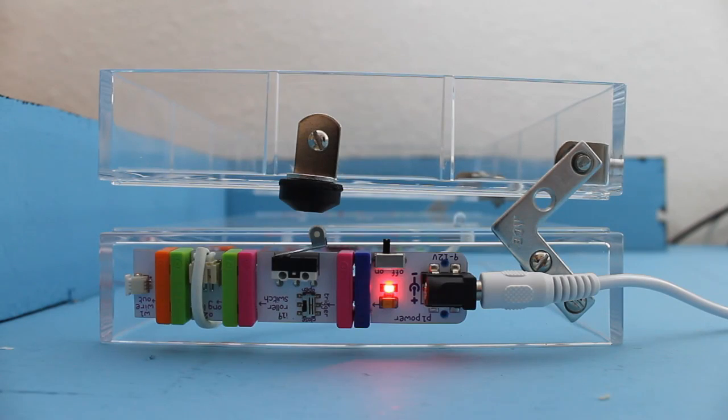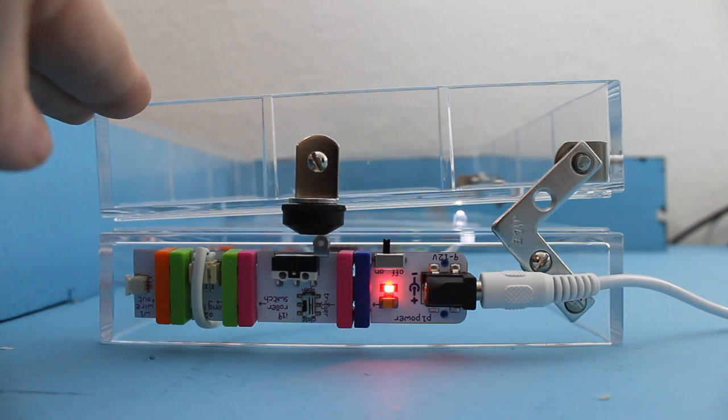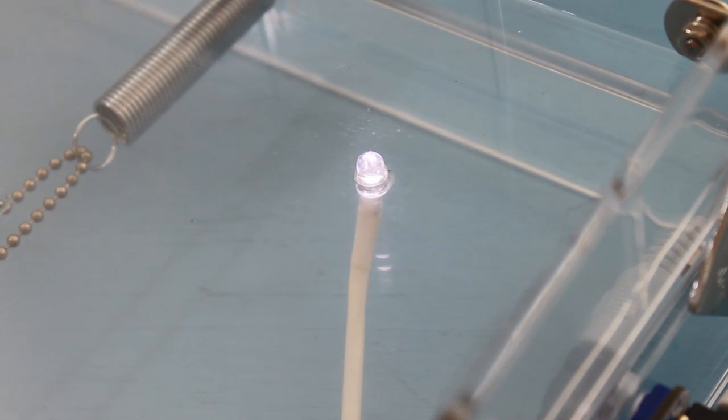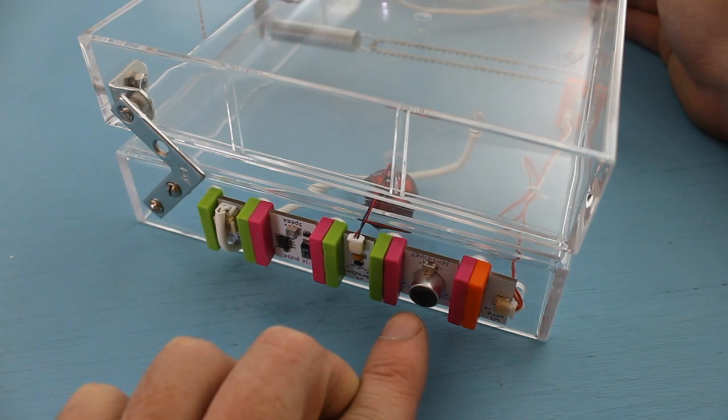When you put something inside, the bumper activates the roller switch bit, which turns on the first LED bit, and also arms the sound trigger bit.